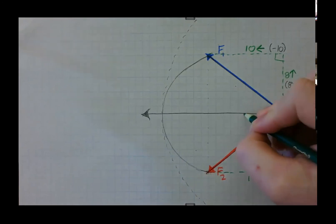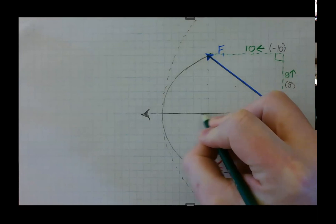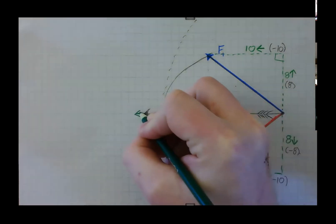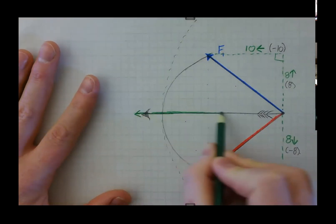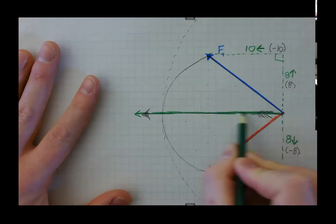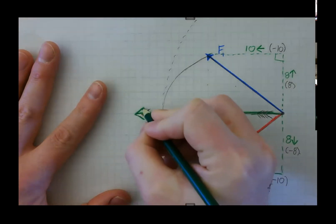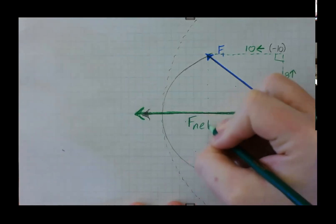So we know then that our net force is actually negative 20 or 20 to the left. One, two, three, four, five, 10, 15, 20. And we can draw that here in whatever color we want. And that is our net force.